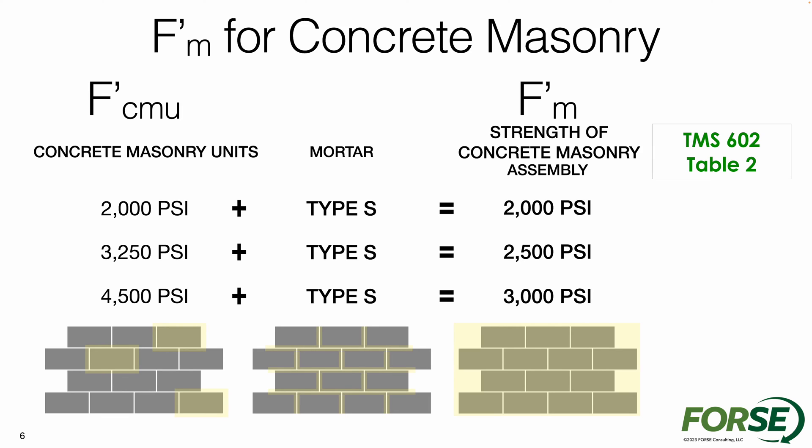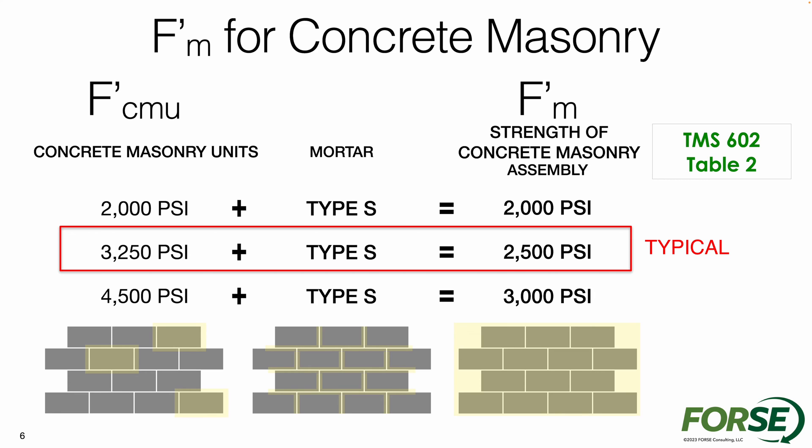With 2000 PSI blocks and type S mortar, we're going to have an F'M of 2000. For blocks that are 3250 PSI or more, we're going to have type S mortar and a design strength of 2500 PSI. And then finally, if we have blocks as strong as 4500 PSI within that same type S mortar, we're going to have a design strength F'M of 3000. Across the United States, we often have blocks that are going to be stronger than 3250 PSI, so I can very confidently say when we use those blocks in type S mortar, I typically am going to do my masonry designs for an F'M of 2500 or greater.